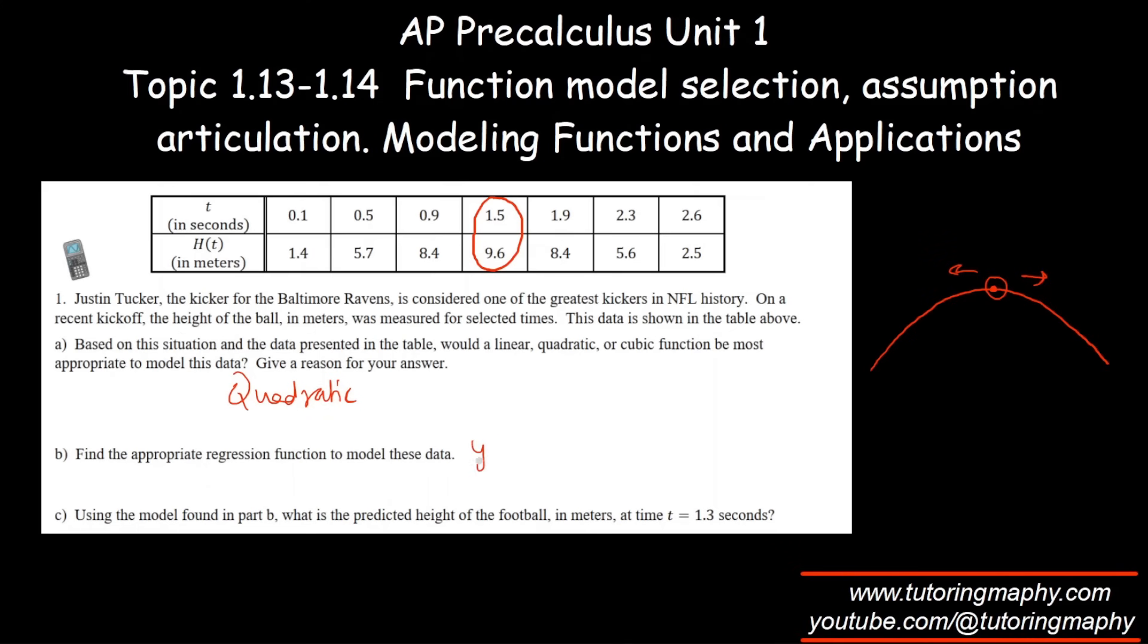This is our regression model. The regression model is y equals negative 4.9148x squared plus 13.7139x plus 0.0696. We have to use this model to predict the height at t equals 1.3, so all we need to do is plug in x as 1.3. If we use our calculator, we're going to get the y value or the height as 9.591 meters. That is our answer for this question.